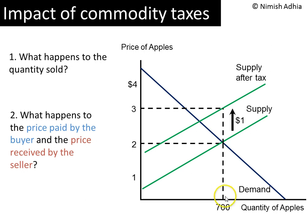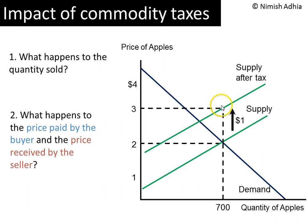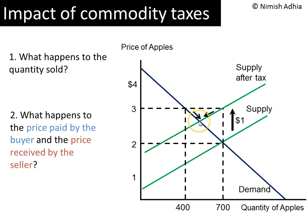But will consumers pay $3 for apples? The demand curve tells us that at a price of $3, consumers are not going to demand 700 — they're going to demand fewer units. So if producers were to actually raise the price to $3, there would be a surplus in the market. A surplus cannot persist in a free market, so the price would begin to fall — until the new supply curve intersected the demand curve, giving us the new equilibrium point.